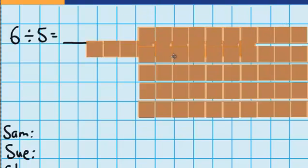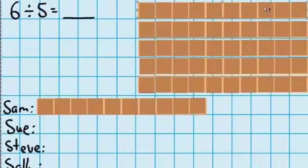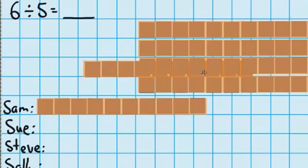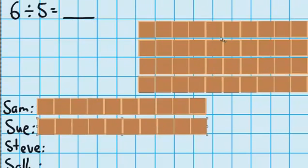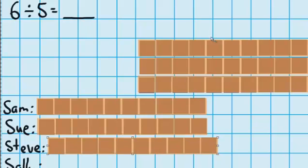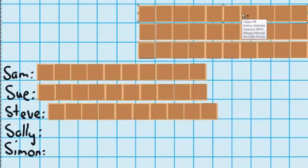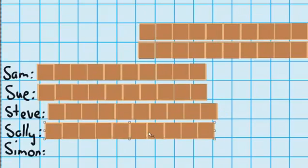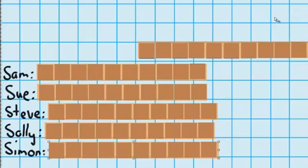So there goes 1 bar for Sam and 1 bar for Sue, 1 bar for Steve, 1 bar for Sal and 1 bar for Simon.